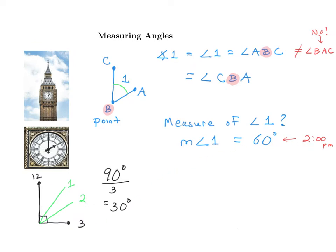We know what happens at 2pm and 3pm. What would the angle be at 4pm? The hour hand is at the 4, so that is 30, 60, 90, and 30 more is 120 degrees — a 120-degree angle. What if it were 6pm? Counting by 30s: 30, 60, 90, 120, 150, 180. In fact, that is a straight line. If it's 6pm, the hour hand is pointing straight down — that corresponds to 180 degrees.